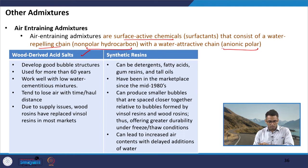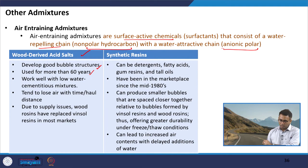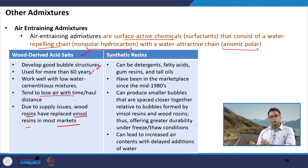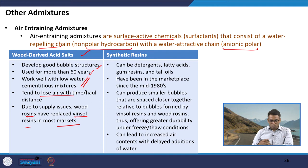Wood-derived acid salts develop good bubble structures and have been used in air-entrained concrete production for a very long time. However, there is currently a supply issue since it is a wood-derived product. Wood rosins have replaced Vinsol resins in most markets. One characteristic is that they tend to lose air with time — the amount of entrained air reduces. This type of material works better with low water-cement ratio concrete.